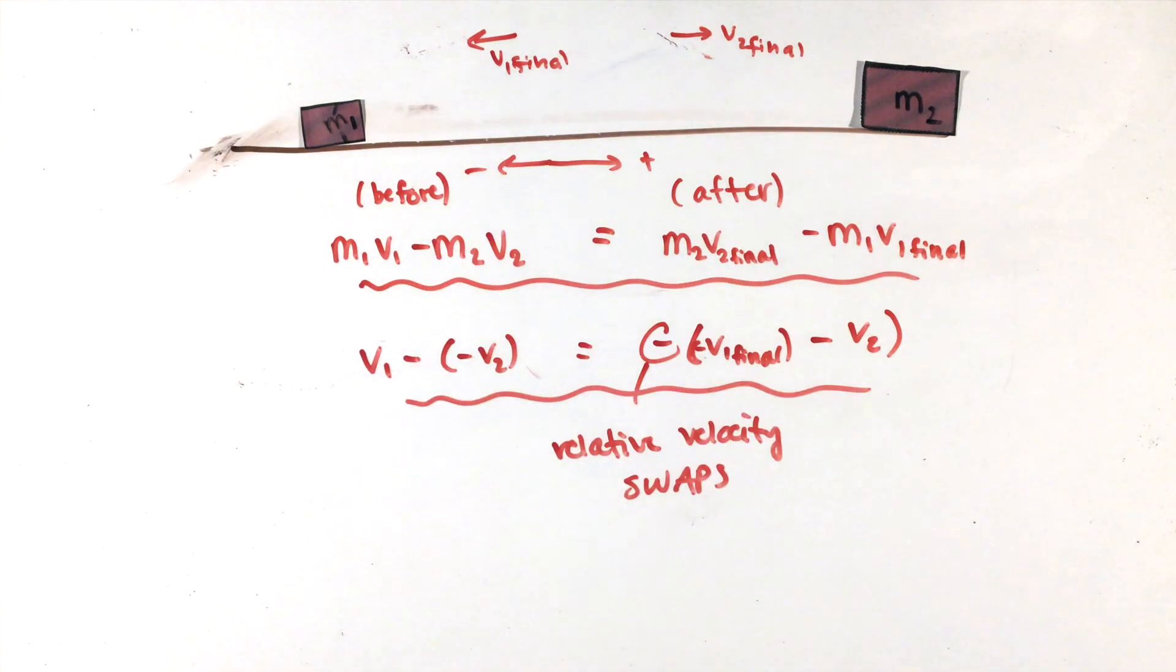From there, all you'll need to do is solve the two equations we wrote in a simple system of equations: momentum conservation and relative velocity swap. Though different quantities will be given to you in the question, these two equations will be all you'll need to solve any quantity they could possibly ever ask for.